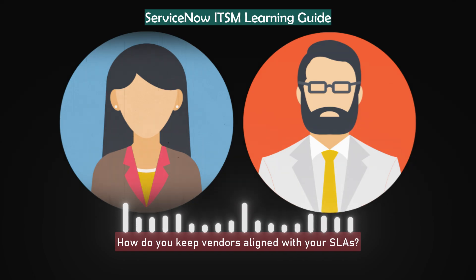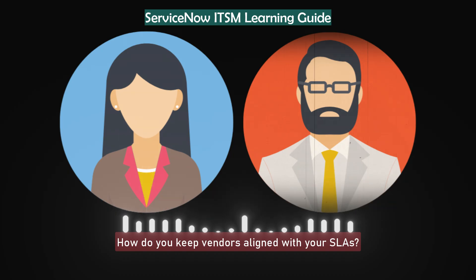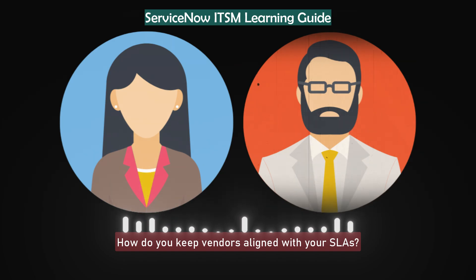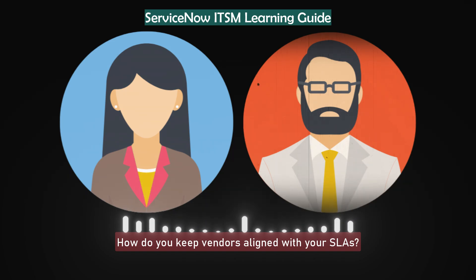How do you keep vendors aligned with your SLAs? I ensure all vendor contracts have clear, measurable commitments that map to our business SLAs. We monitor performance jointly and hold quarterly reviews. I never rely only on their reports — we cross-validate with our own monitoring. If a trend slips, we discuss improvements before escalation. A strong vendor relationship saves a lot of firefighting in real-time scenarios.